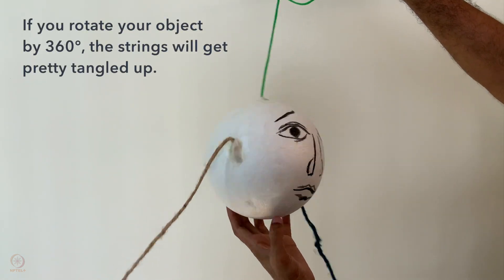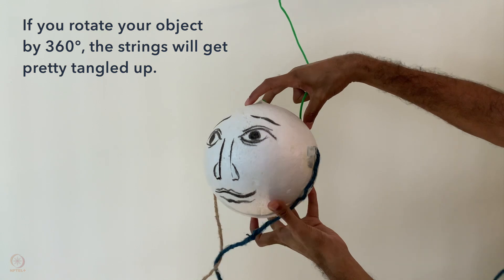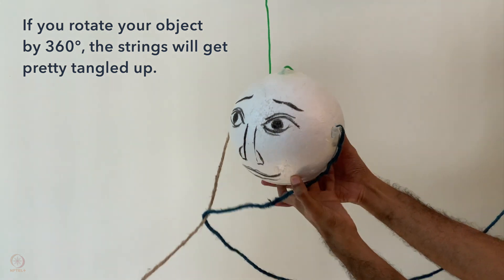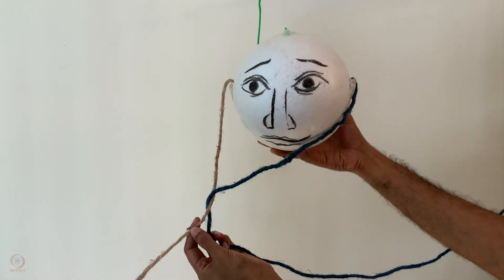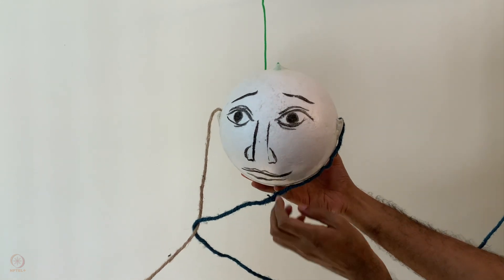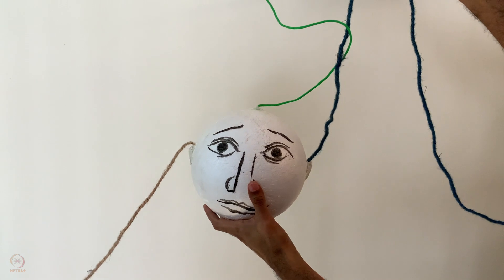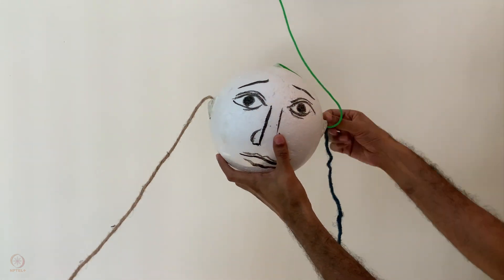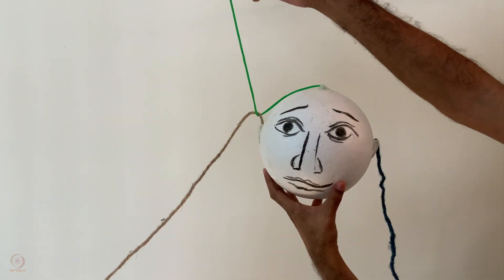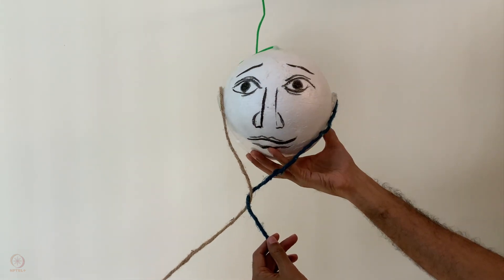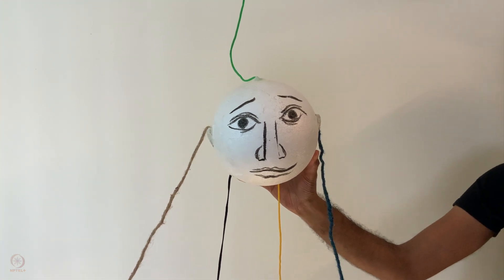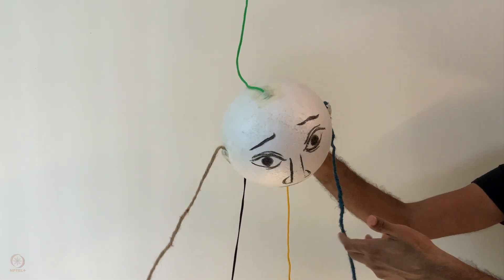Now, if you rotate your object by 360 degrees, the strings will get pretty tangled up. In fact, you can try as hard as you like, but it'll be impossible to untangle the strings and return them to their original state, while keeping the object fixed in place. Okay, let's start afresh, and add a few more strings just for fun.